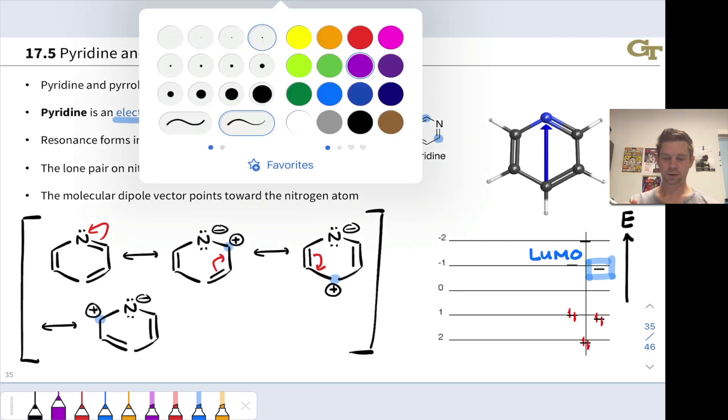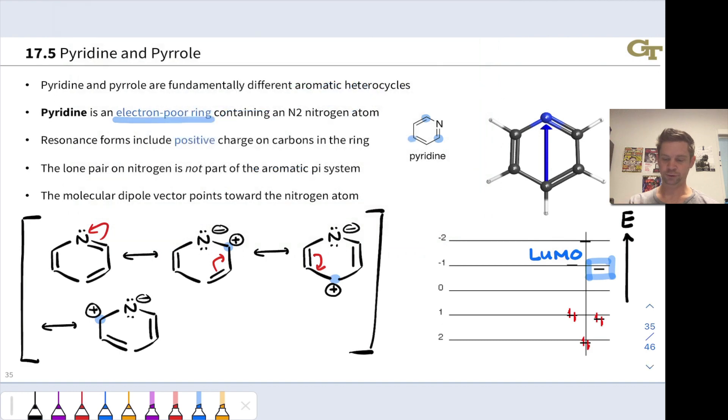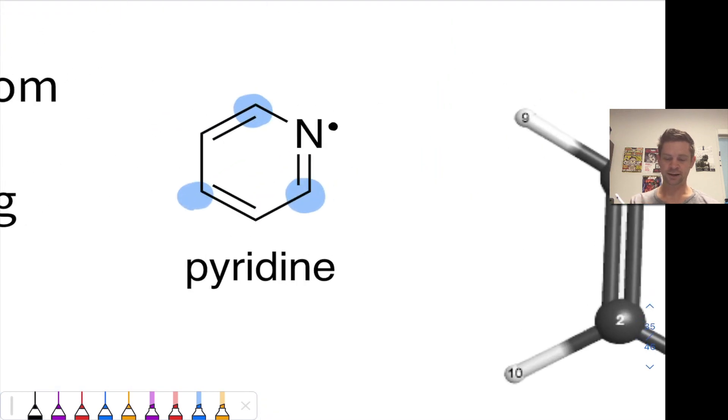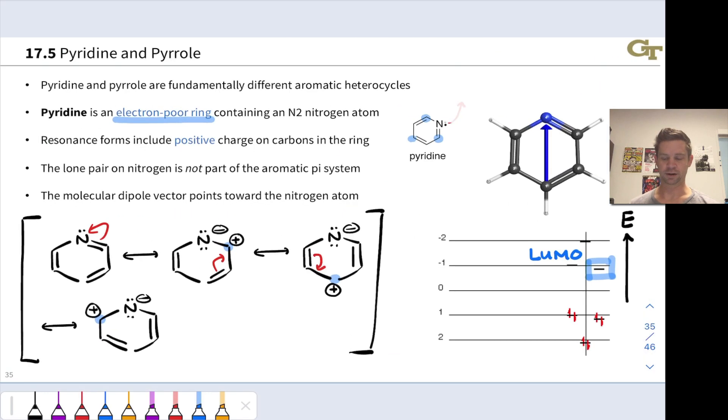So just to highlight that, let's add that lone pair to our structure of pyridine here and show that it can act as a base. It can be given away because it's not part of the pi-system. It's not engaged in electron delocalization. It's a localized lone pair of electrons. One last thing to note here is that the dipole moment of pyridine points kind of as we would expect it to toward the more electronegative nitrogen atom. That's worth pointing out because the next heterocycle we look at, pyrrole,